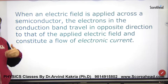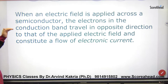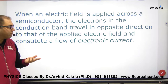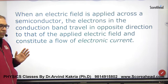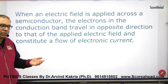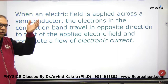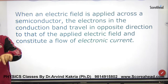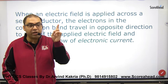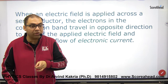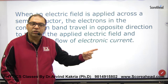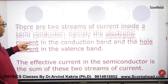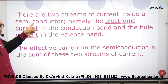When an electric field is applied across a semiconductor, electrons in the conduction band travel in the direction opposite to the applied electric field, while holes, being positive charges, move in the direction of the applied electric field.